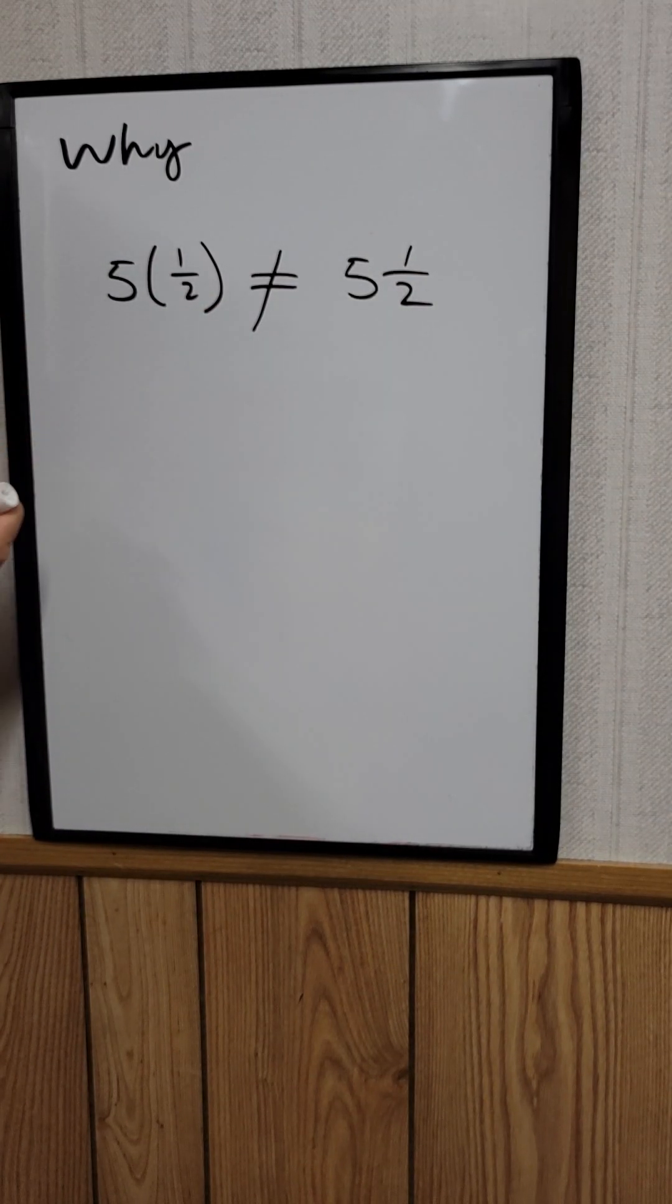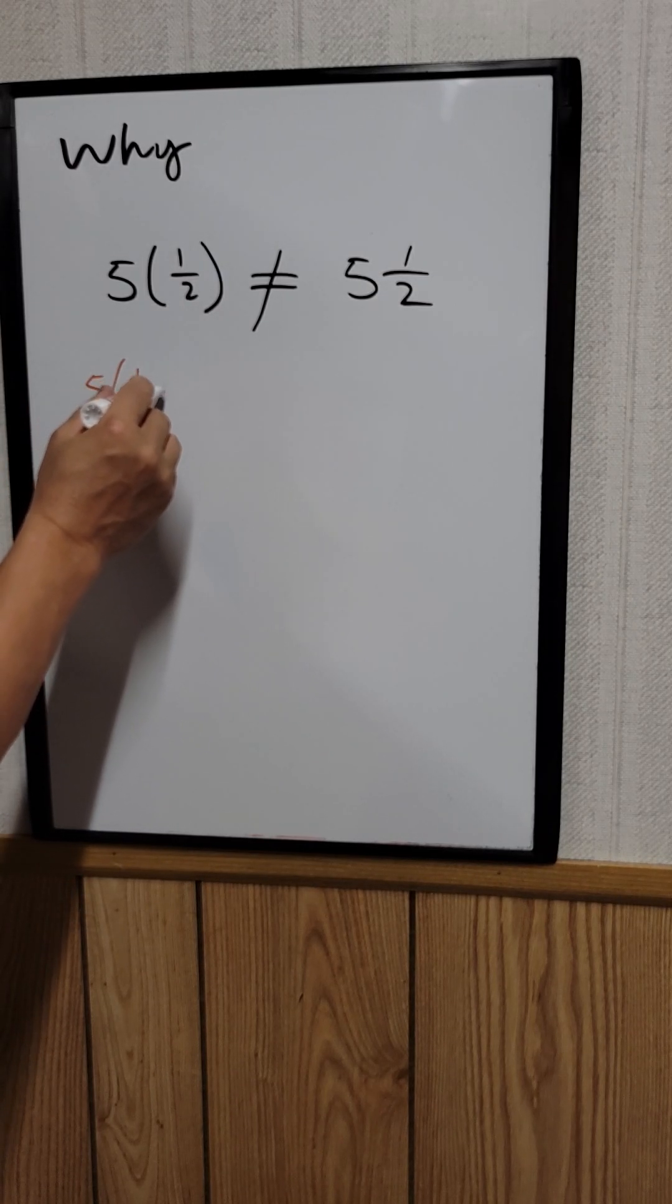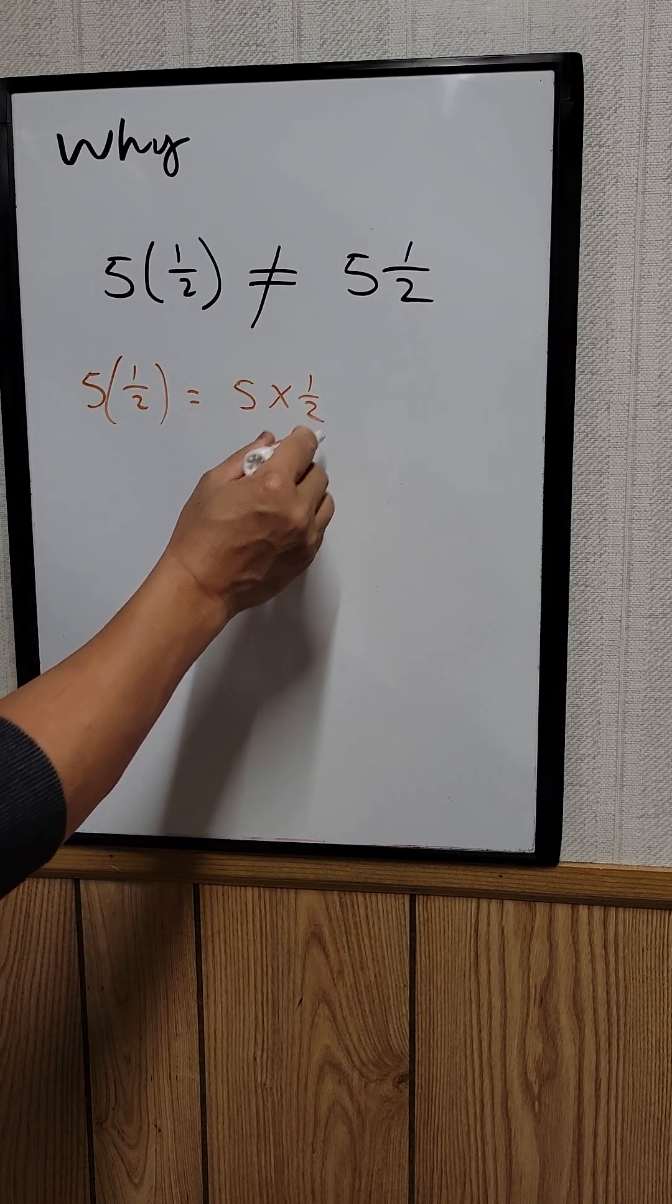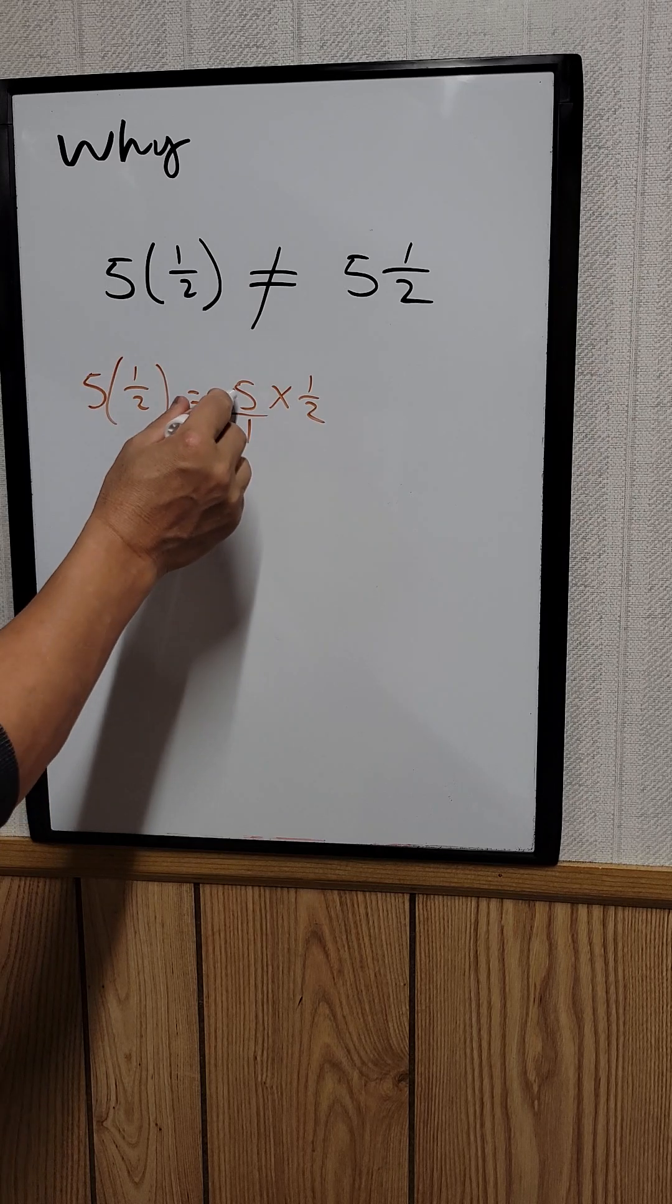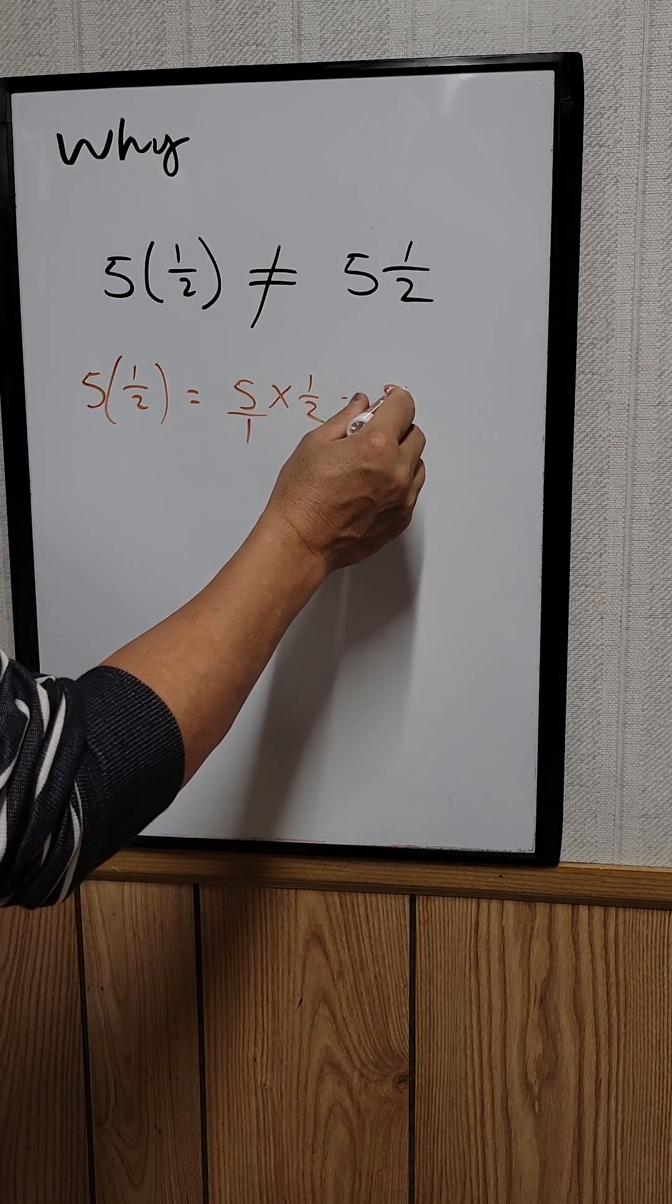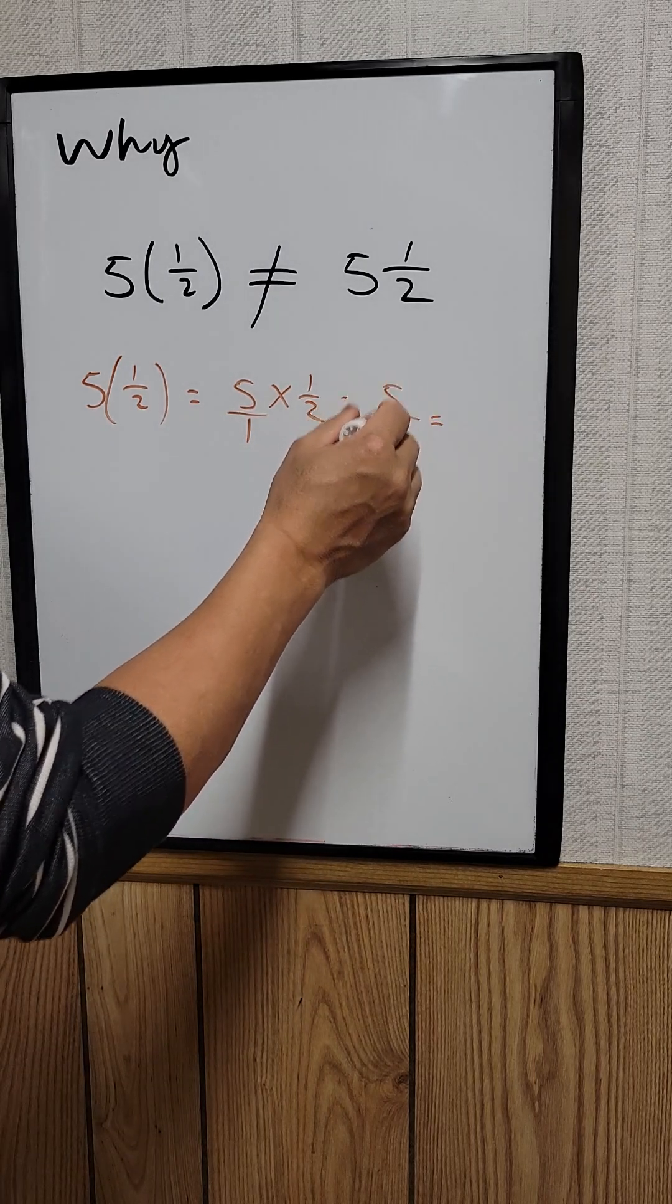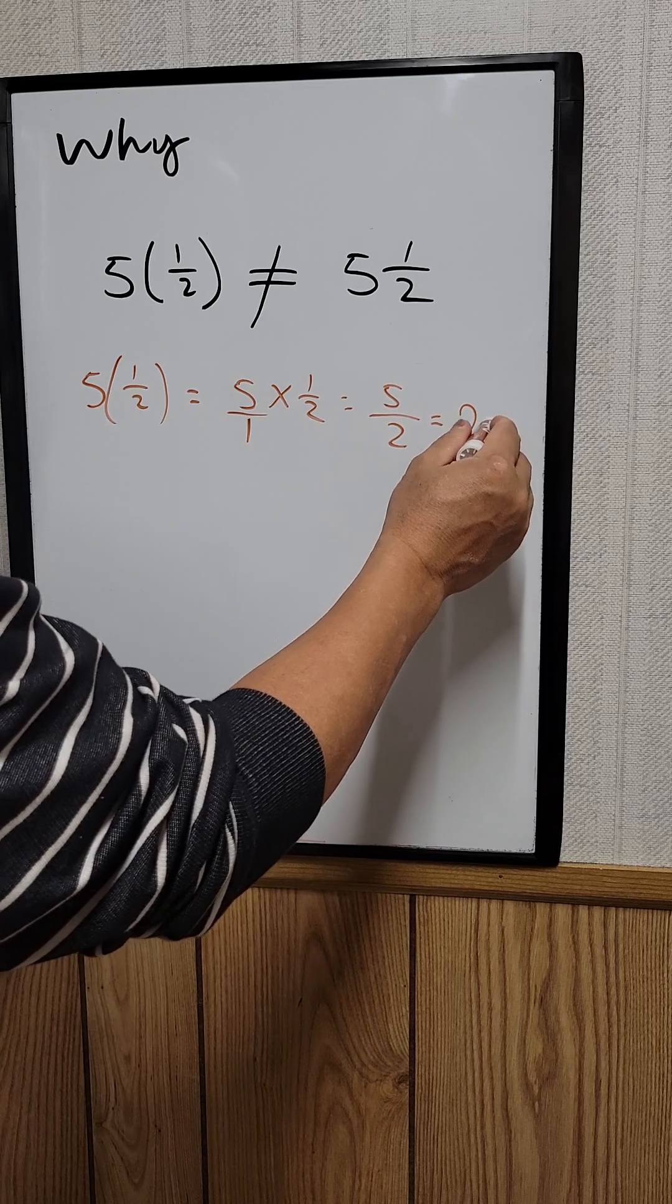So 5 times 1/2 in parentheses is the same thing as saying 5 times 1/2. We put a 1 on the bottom, so 5 times 1 is 5, 2 times 1 is 2. If you divide this, it equals 2.5.